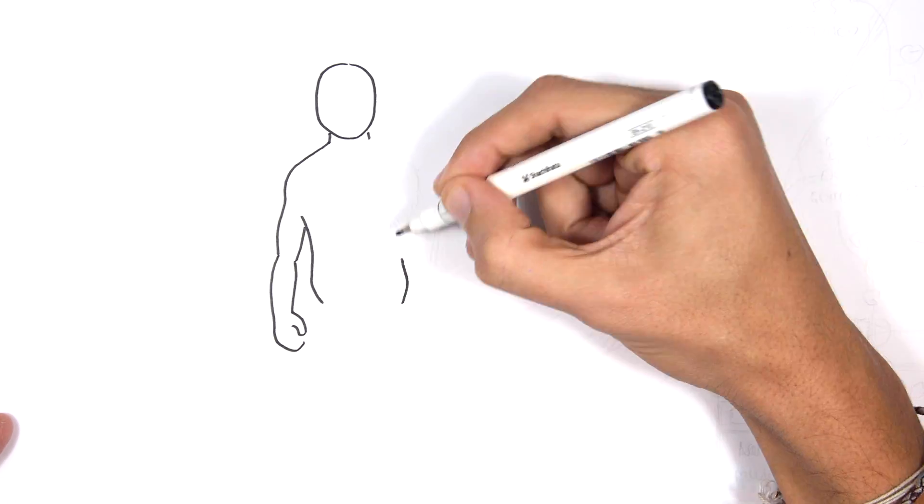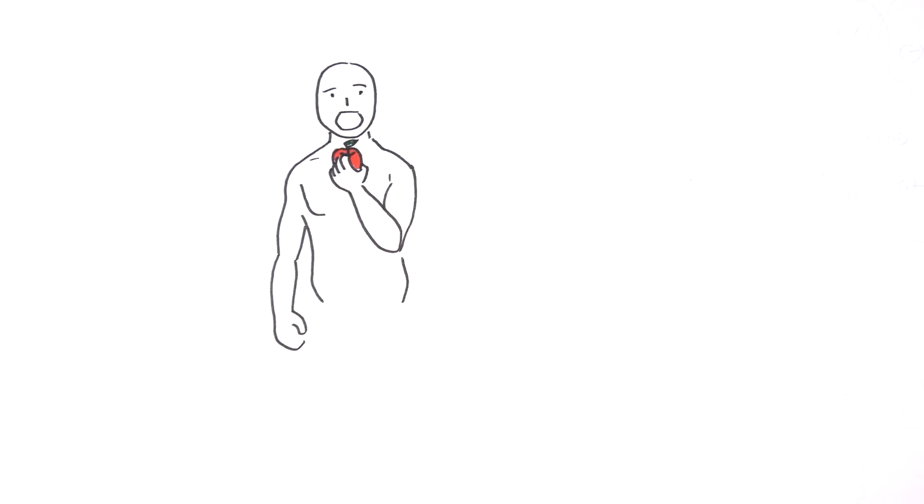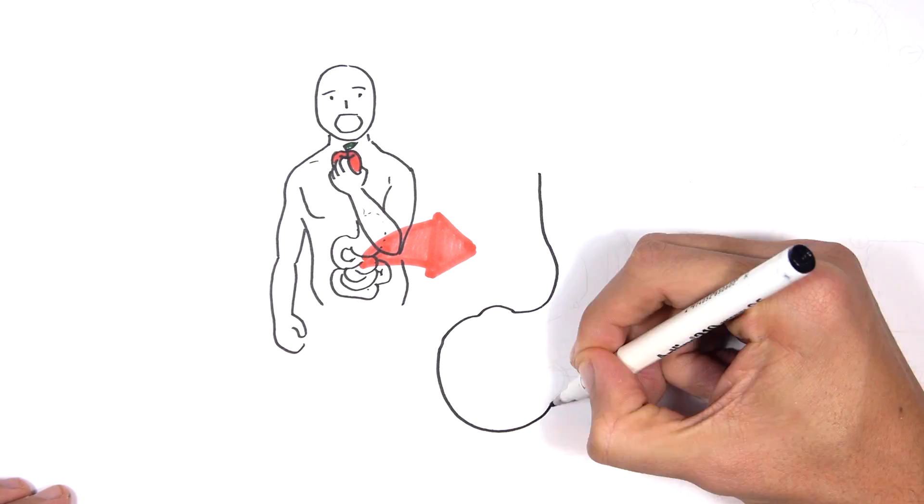What is the role of insulin and how does it help your body regulate blood glucose? When eating a meal such as this apple, your body will begin breaking it down so that it can absorb its nutrients in the small intestine.